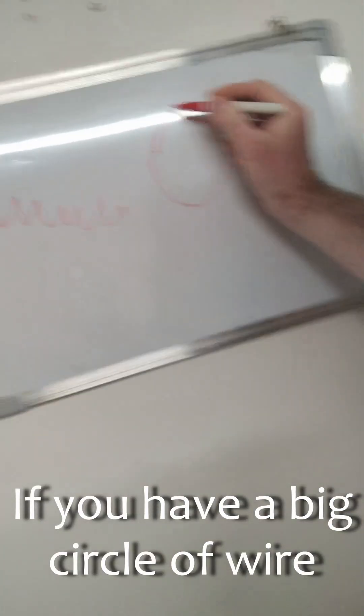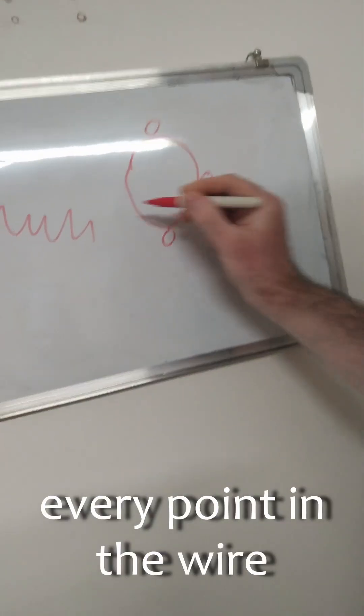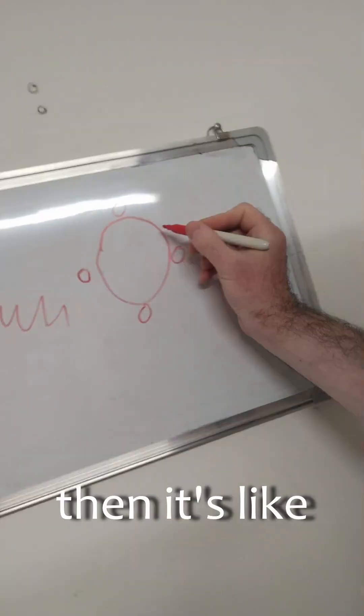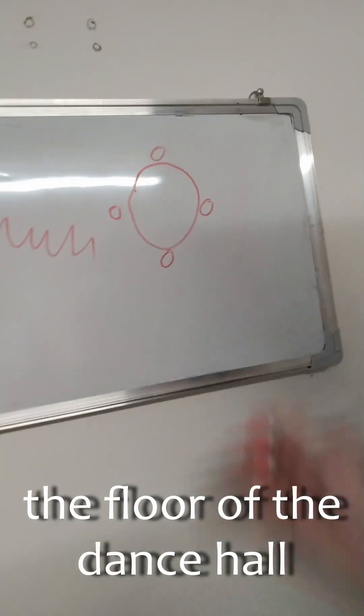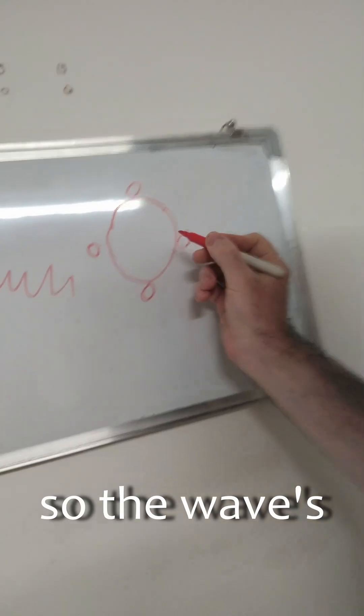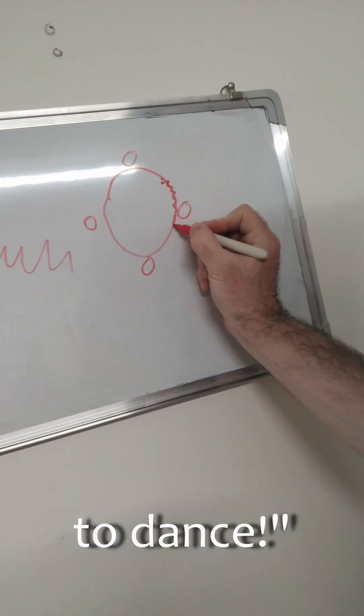If you have a big circle of wire where magically every point in the wire is zero volts exactly, then it's like the ceiling and the floor of the dance hall are going to be the same height, so the wave's going to be like there's no room to dance.